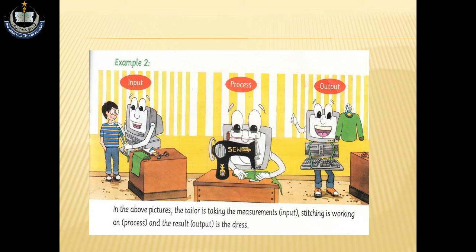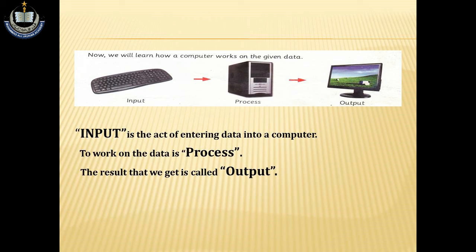Now students, we have learned: input is the act of entering data into a computer, to work on that data is process, the result that we get is called output. جو بھی ہم keyboard کے ذریعے typing کرتے ہیں وہ input کہلاتا ہے۔ Input کو CPU process کرتا ہے۔ Process کرنے کے بعد جو بھی result ہمیں ملتا ہے وہ output کہلاتا ہے جو کہ monitor کے ذریعے ہمیں نظر آتا ہے۔